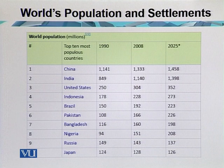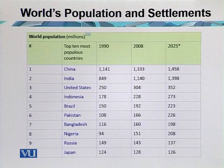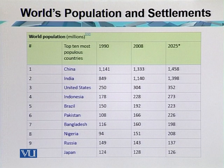Here are the most populous countries of the world: number one is China, number two is India, number three is the United States of America, number four is Indonesia, number five is Brazil, number six is Pakistan, number seven is Bangladesh, number eight is Nigeria, number nine is Russia, and number ten is Japan.